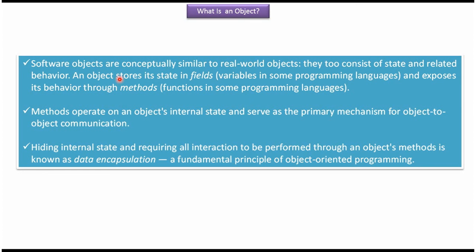Software objects are conceptually similar to real world objects. They too consist of state and related behavior. An object stores its state in fields, which are also called variables, and exposes its behavior through methods.